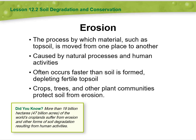Erosion is caused by natural processes and human activities, and it often occurs faster than soil is formed, depleting fertile topsoil. Crops, trees, and other plants and communities help protect soil from erosion.